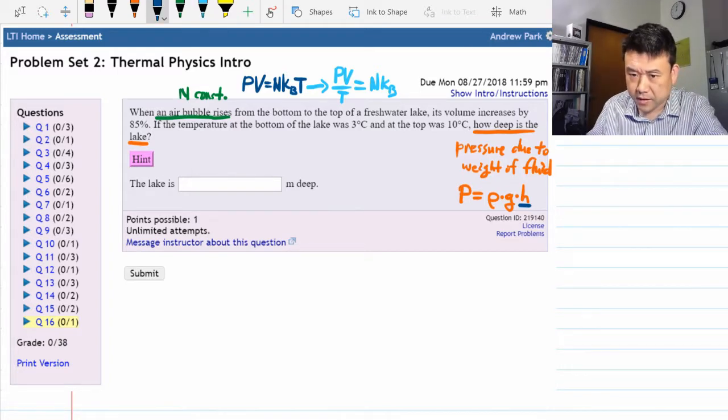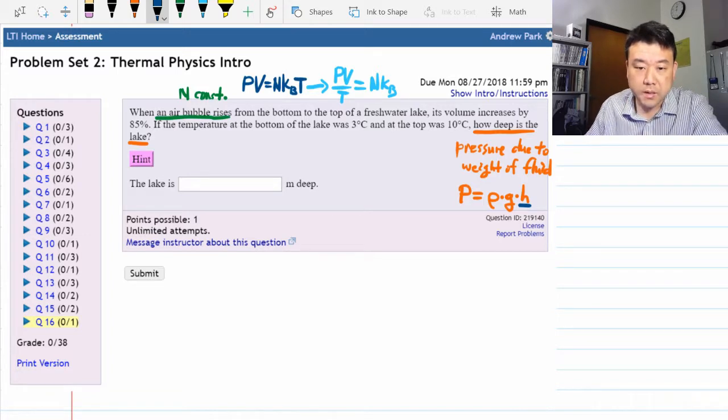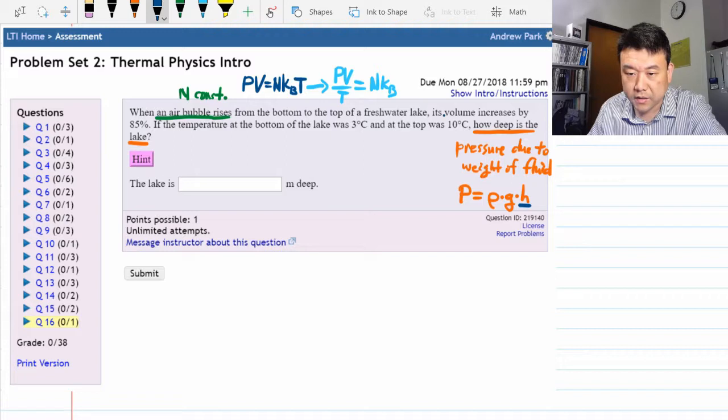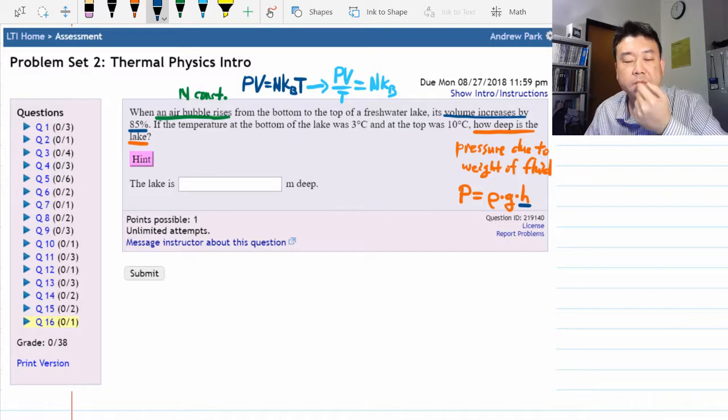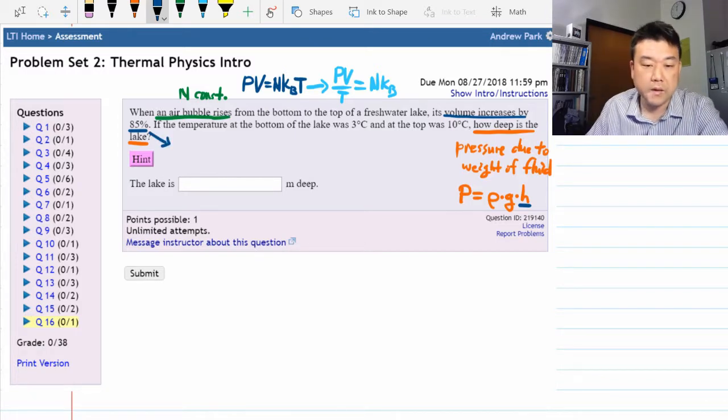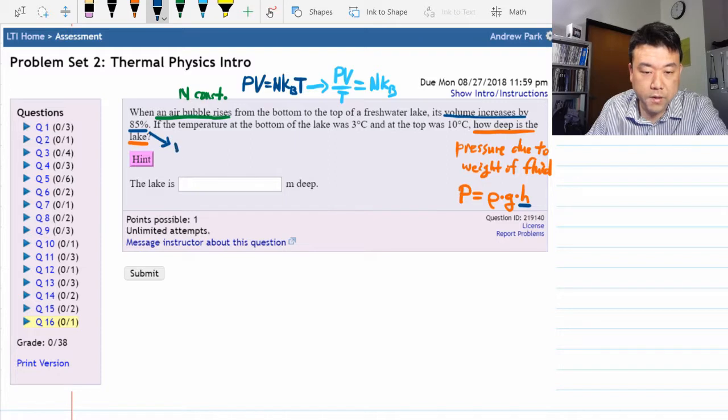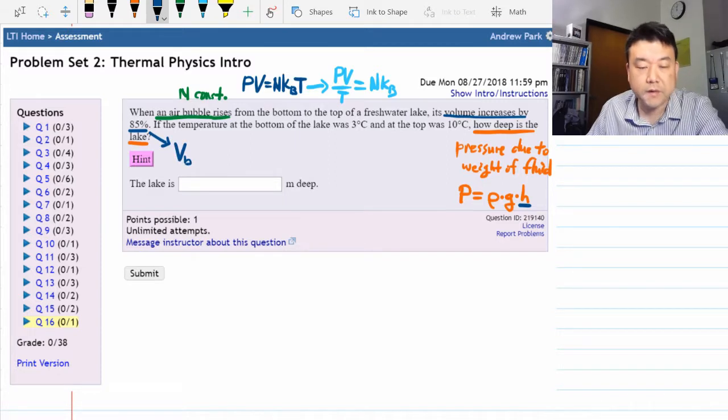Let's diagram some of the information that are given. So it's going from bottom to top. It says volume increases by 85%, so we are given some kind of number for percent. If we say volume at the bottom is V sub B,